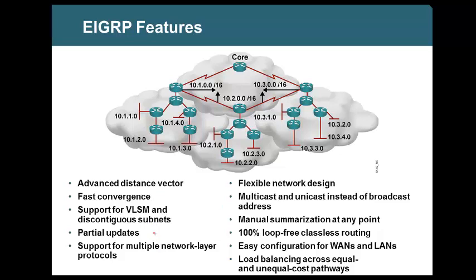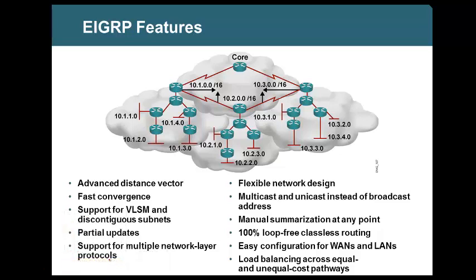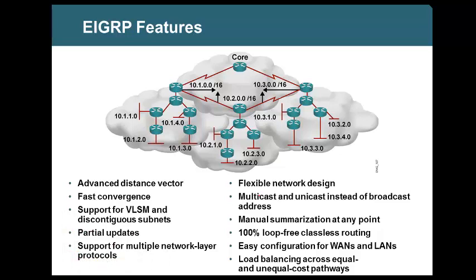Coming back to EIGRP — it is flexible and supports any type of network design: serial links, Ethernet links, 10 or 100 routers, ring topology, hub-and-spoke, or full mesh. EIGRP supports every design.